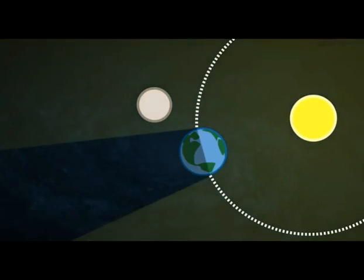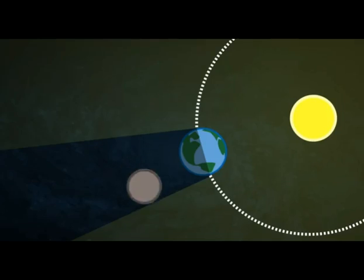The sun is always casting Earth's shadow into space. It's always there no matter what. It's just a shadow shining on blackness — a shadow in darkness. So the moon occasionally passes through that shadow.